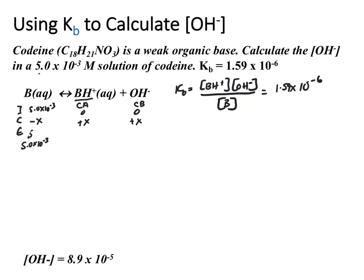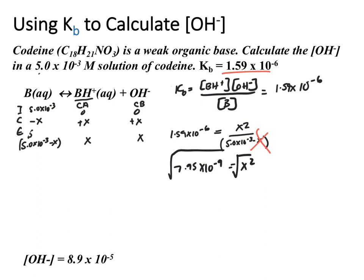We'll plug those into our equilibrium expression, so it equals X² over 5.0×10⁻³ minus X. Now we'll treat X as negligible because we have a really small Kb. We'll solve for the remaining X, which gives us the following to take the square roots of both sides. X equals 8.916×10⁻⁵.